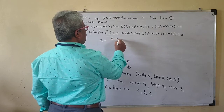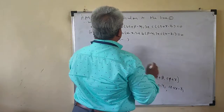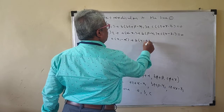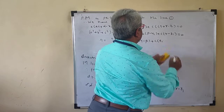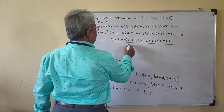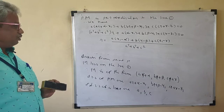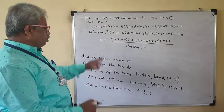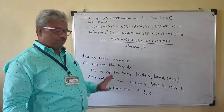So R equals [A(x1 − α) + B(y1 − β) + C(z1 − γ)] upon (A² + B² + C²). From this you get the value of R. So now if you put the value of R back, you get the coordinates of M.